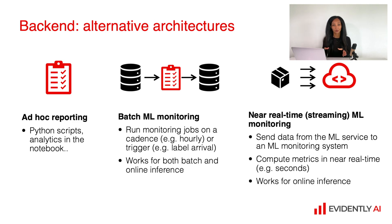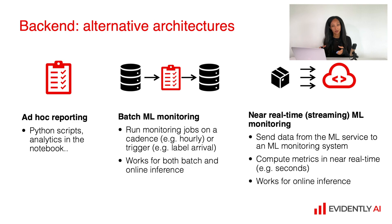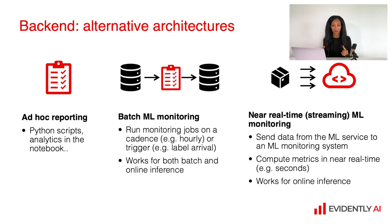There are quite a lot of metrics which are supposed to be calculated in a batch way. For example, data drift calculation, which assumes the comparison between the distribution of the same features from a reference and current dataset. Even if you have your machine learning model deployed as an online service, you still want to have your monitoring — at least for drift metrics — implemented as a batch. And actually it works fine for all the other metrics too. Even if your model is deployed as an online service, you can still implement monitoring in a batch way.